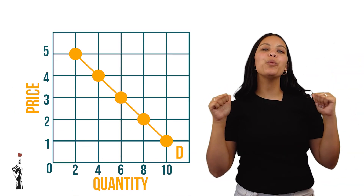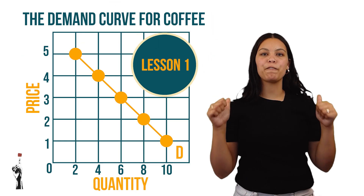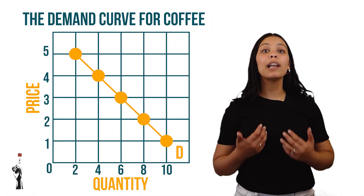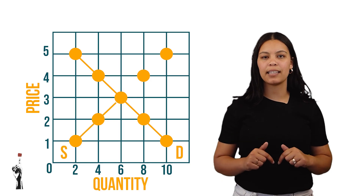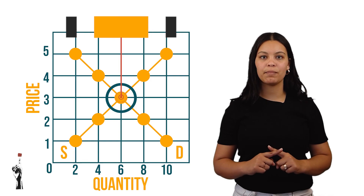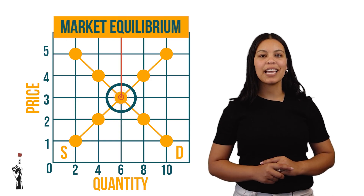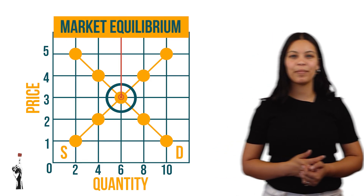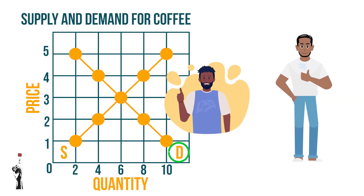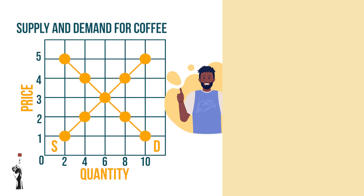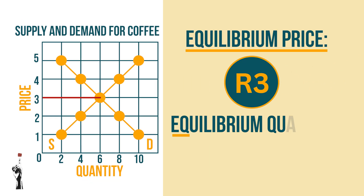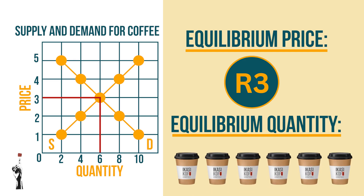Behind me you will see the demand graph we plotted in the first lesson. If we add the supply graph we plotted in this lesson, you will see that the two curves meet at a middle point. This point is known as the market equilibrium. Here, both Kamva and the customers are satisfied with the price of the products. The equilibrium price is 3 rand. The equilibrium quantity is 6 cups of coffee.